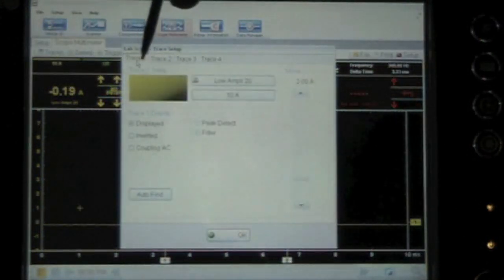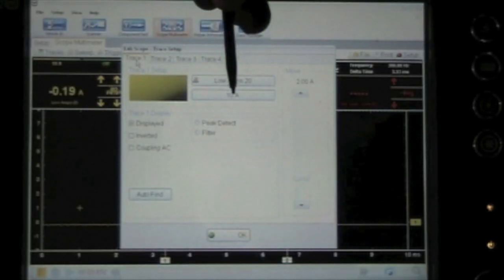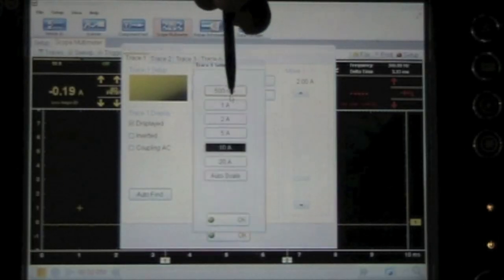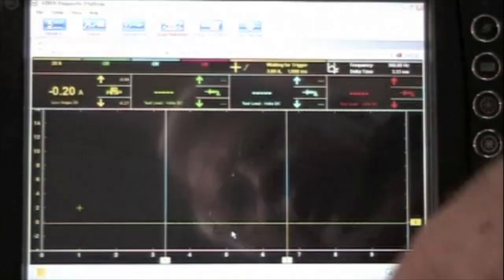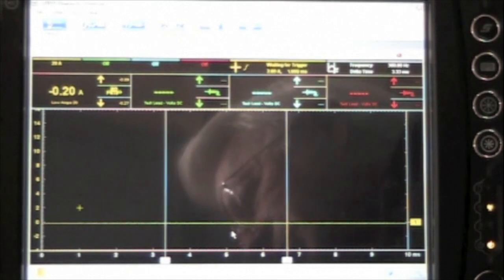I'm going to go to the yellow trace which I'm on. Instead of 10 amps—remember we're using current here, current probe—I'm going to go down to 20 amps. So set up the scope so it will display what you want to see.